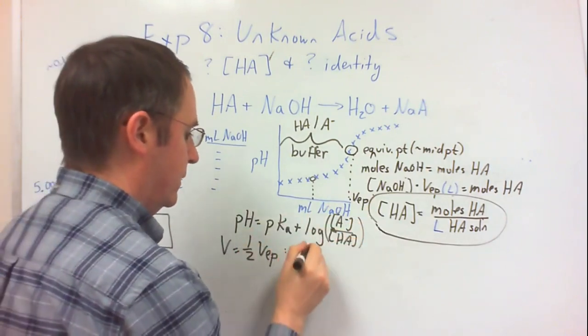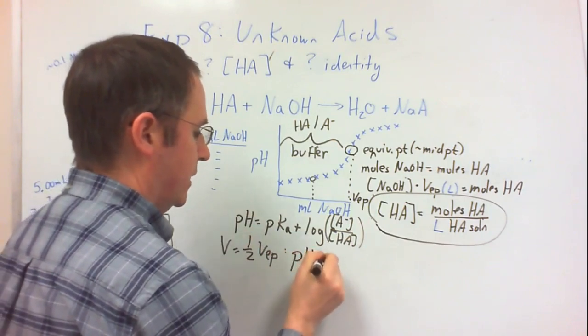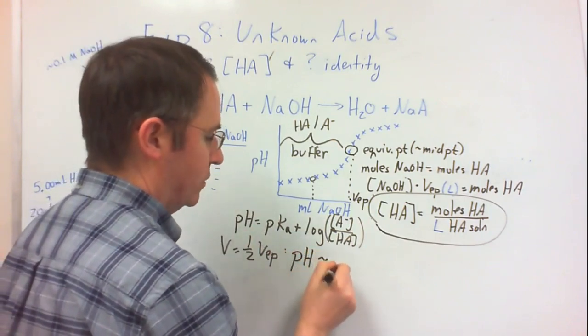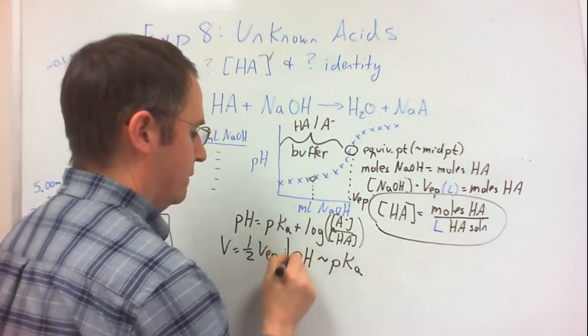So then, at that point, the pH is equal to, or at least approximately equal to, the pKa of my weak acid.